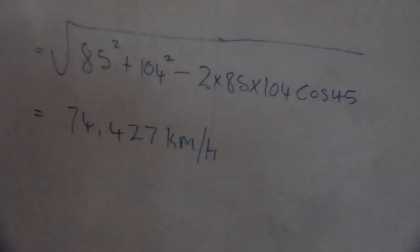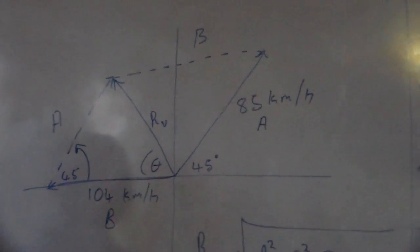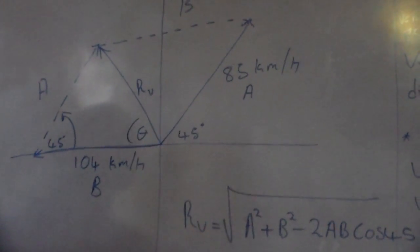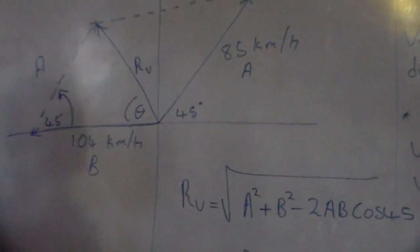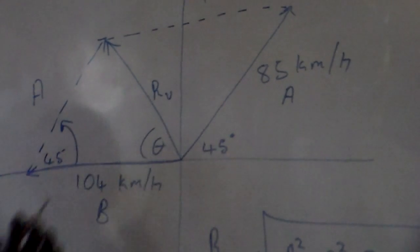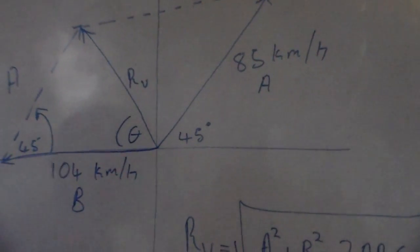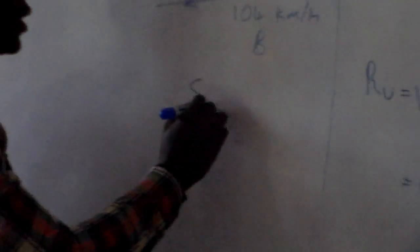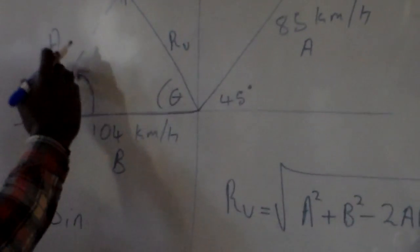We also need to find the direction, which means we must calculate the angle theta. This angle theta will determine the direction of the resultant velocity. In order to find the angle, we now use the sine rule. The sine rule requires two sides and a known angle.